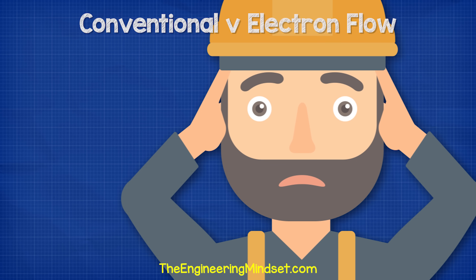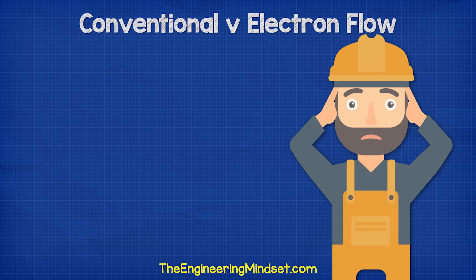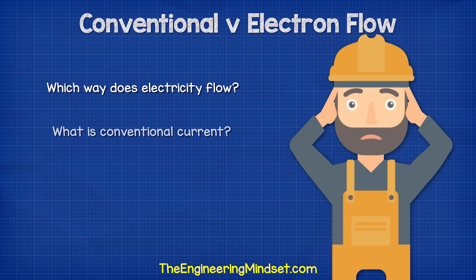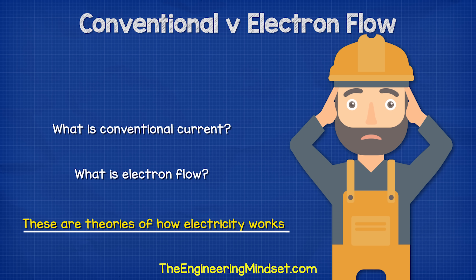Something that's going to cause you great confusion when you're learning about electricity is the difference between conventional current and electron flow. These are both theories of how electricity works.